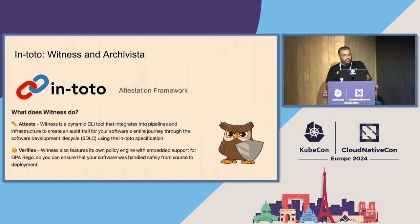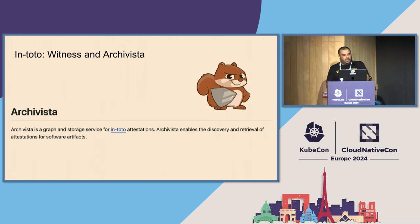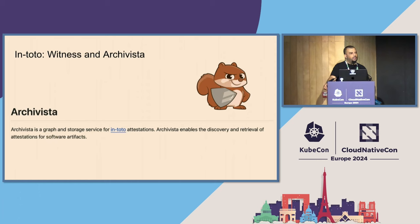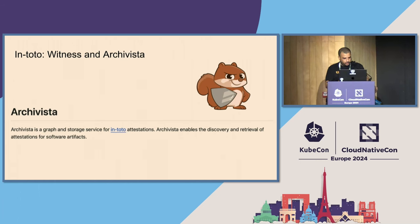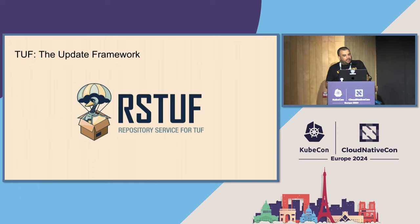In this demo, I'll use witness to generate an attestation and validate it. Archivista is a graph and storage service for in-toto attestations — it means that if you generate attestations, you can store them in archivista and use graph queries to retrieve the attestations you want to verify.